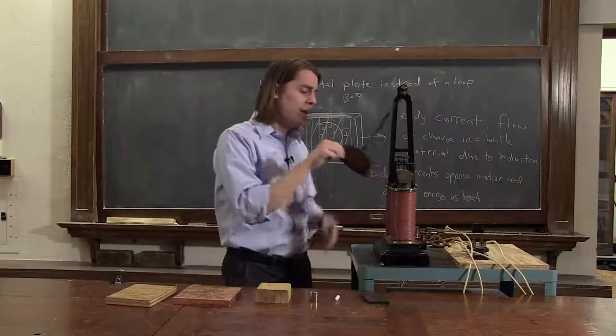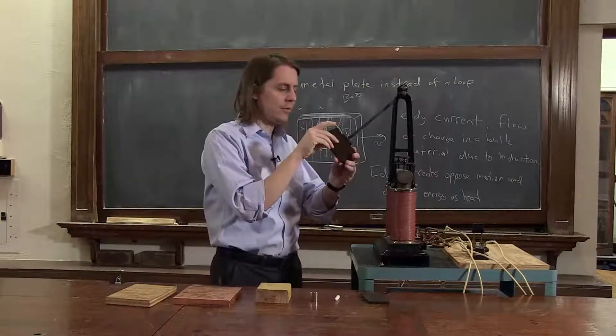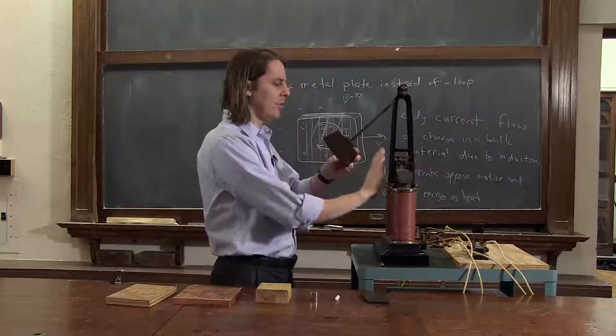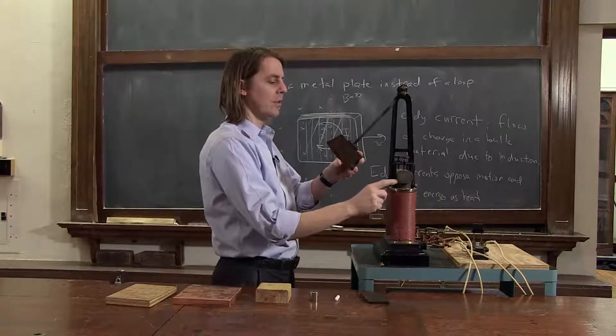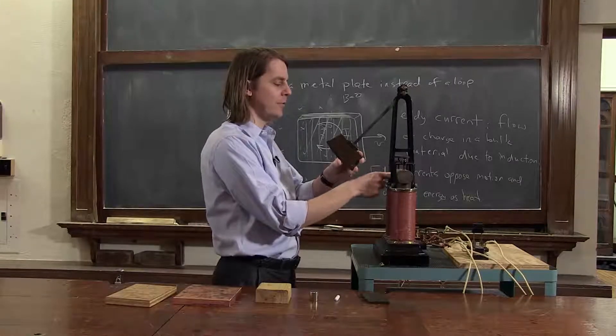So now we're going to see some eddy currents in action. Here is a copper plate that will have eddy currents in it, and here we have an electromagnet. We're going to pass a big current through these iron cores, and they become magnetized and it makes a large magnetic field in this gap.